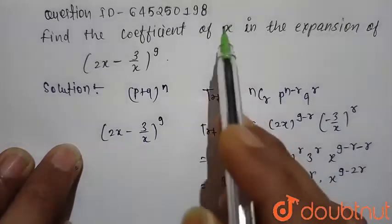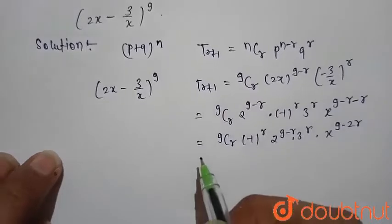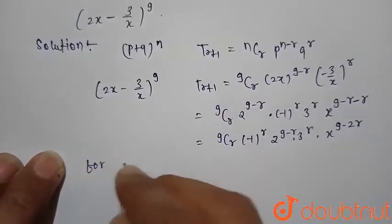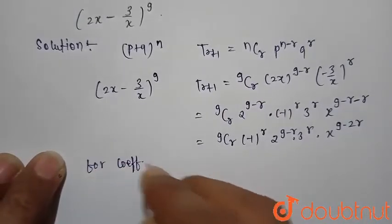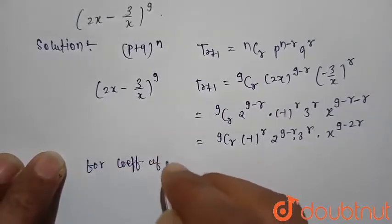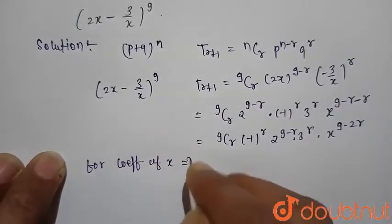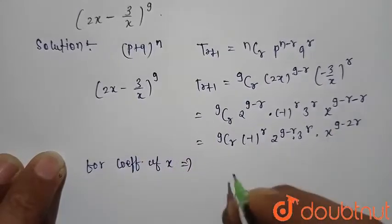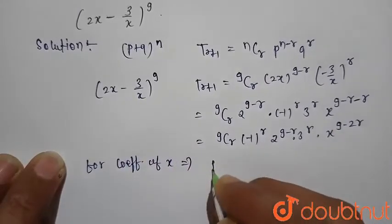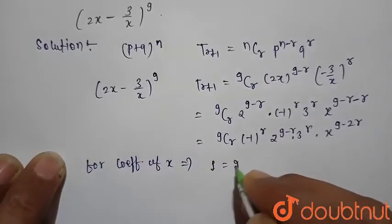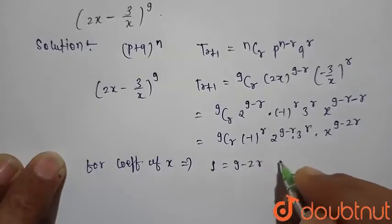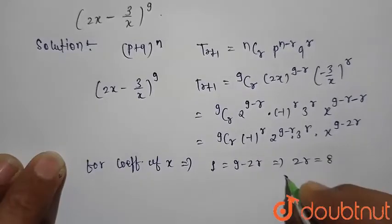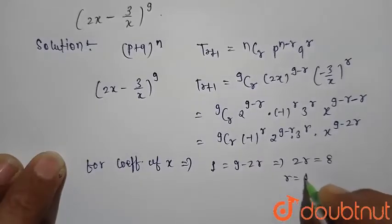Now we want to find the coefficient of x, which implies x raised to the power 1. So we compare this power and write: 1 = 9 − 2r. This gives 2r = 8, so r = 4.